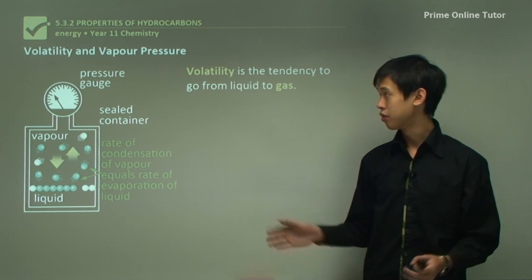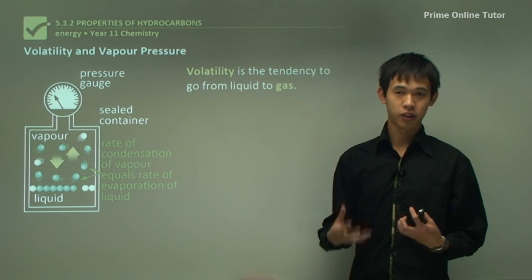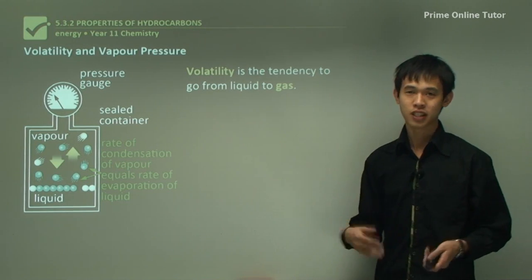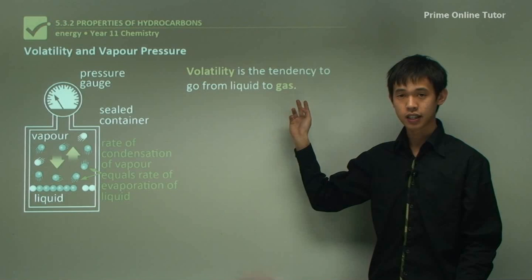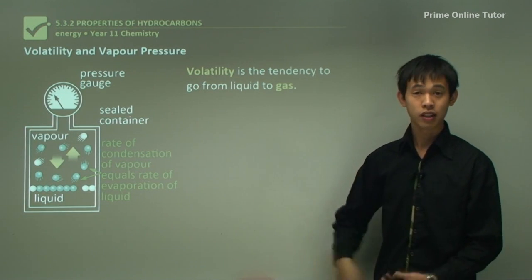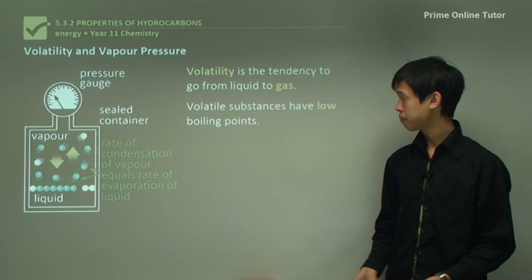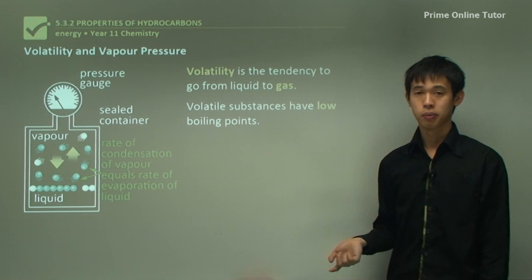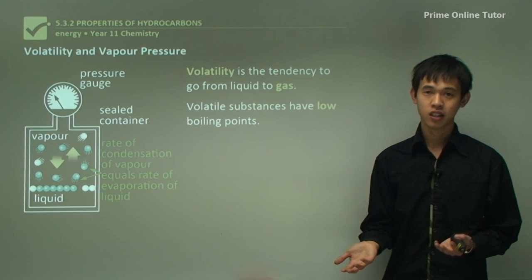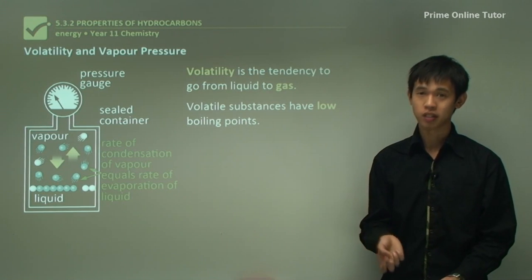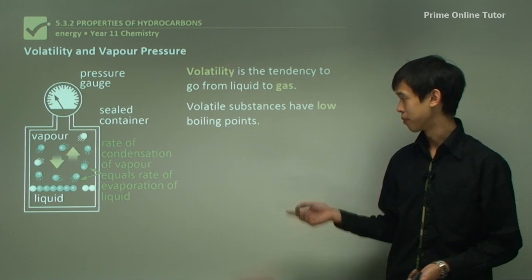Moving on to volatility and vapor pressure. Volatility, in everyday use, means something unpredictable and about to explode, but in chemistry volatility just means the tendency of a substance to turn from liquid to gas. Something that's very volatile will easily turn to gas, and something that's not volatile will stay liquid. Volatile substances have low boiling points — if a substance has a boiling point below room temperature it will be very gaseous, whereas if the boiling point is much higher than room temperature it will be liquid or maybe even solid.